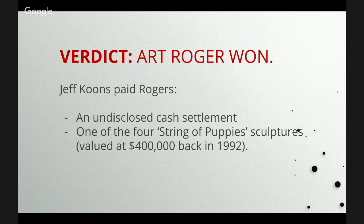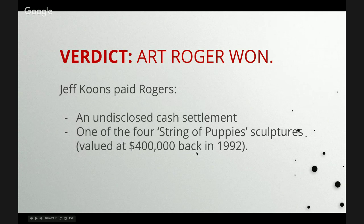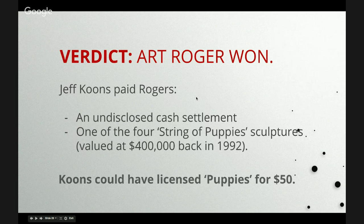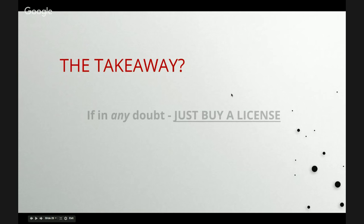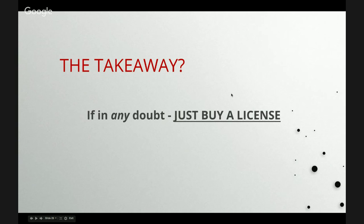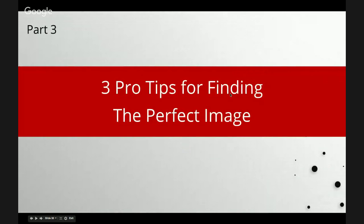Art Rogers won and Jeff Coons paid an undisclosed cash settlement believed to be quite large. On top of that, he was ordered to give Rogers one of the 'String of Puppies' sculptures, valued at $400,000 at the time in 1992. All up, Coons could have licensed that puppy image for $50. The takeaway is simple: if you're in any doubt, just buy a licence.